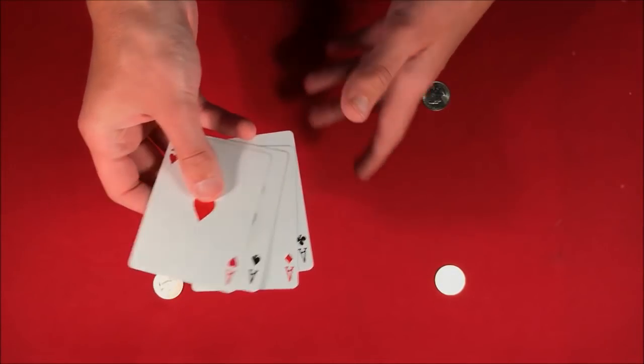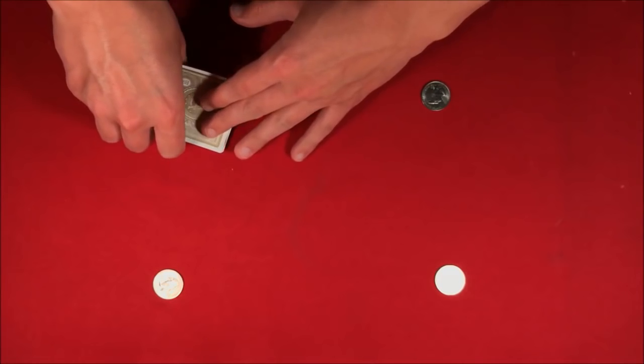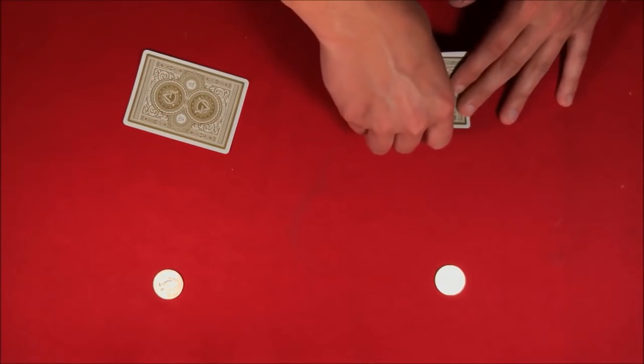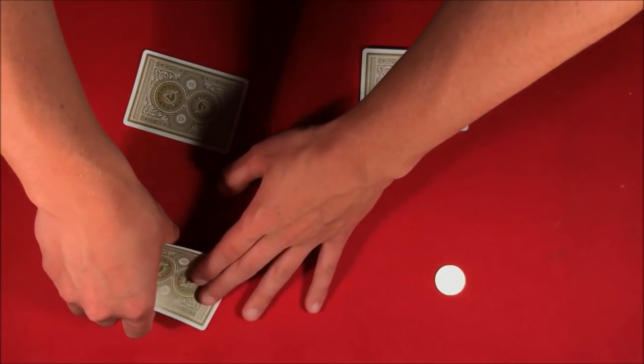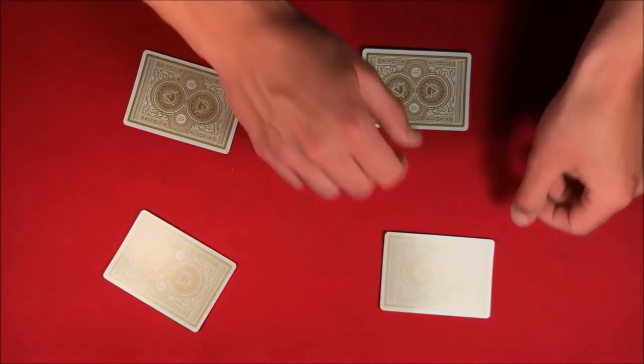You start off by putting an ace on top of each quarter just like this, so these should be covered up. And then from here what I'm going to show you guys is that if you take the cards and show you just like that, hopefully what should happen is...